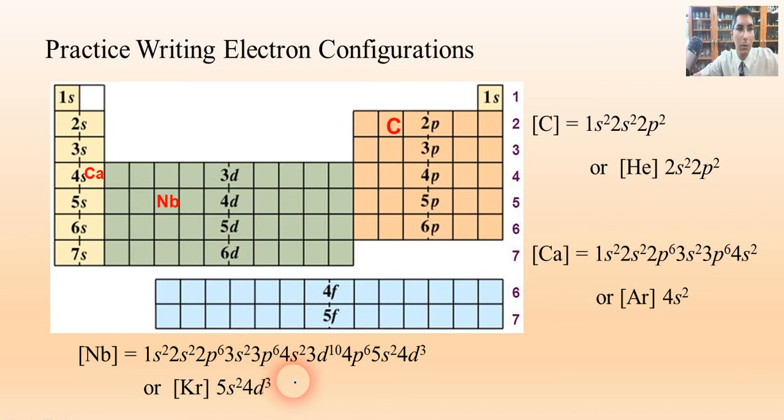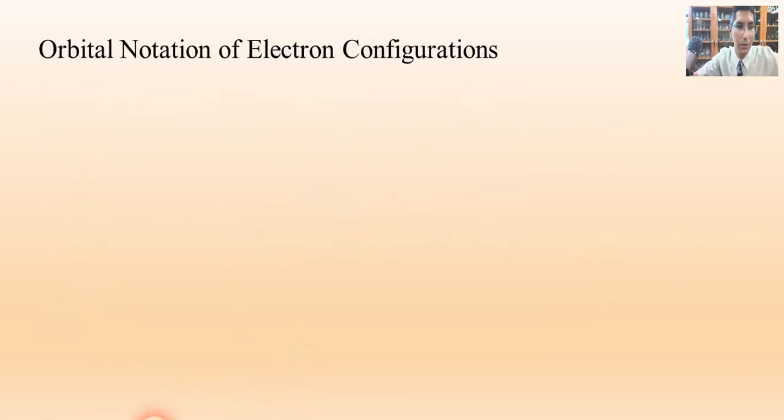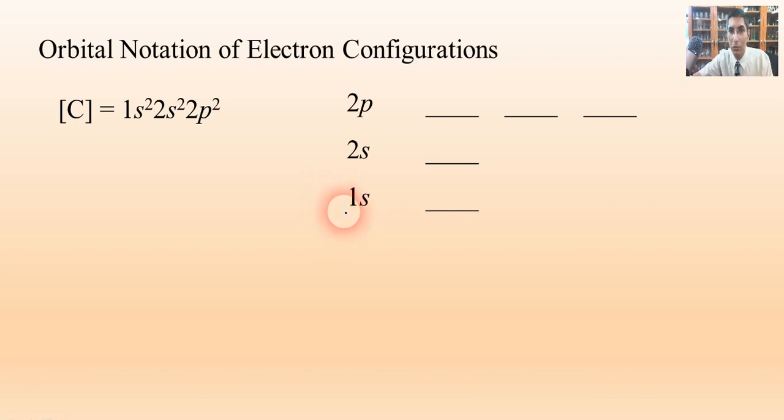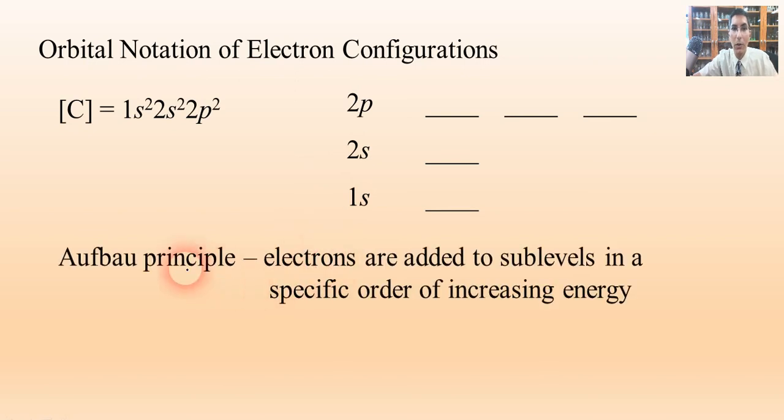What we're going to do right now is take a look at what we call orbital notation of electron configurations. So we're going to take the electron configuration for, let's say, carbon, since we started out with that, and we're going to place these into orbitals. Now when I say orbitals, that means 1s has one orbital in it, the 2s sublevel has one orbital, and the 2p sublevel has three. And when we assign these, we're going to always assign them in a very specific order, in which we start with the lowest energy, which is 1s, and then we work our way to higher energy, like 2s and 2p. That's called the Aufbau principle.